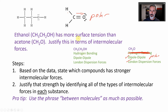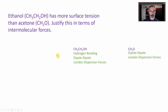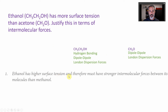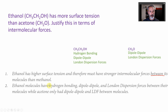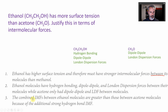Here's how we make the argument. Step one: 'Ethanol has higher surface tension and therefore must have stronger intermolecular forces between its molecules than acetone.' Step two: 'Ethanol molecules have hydrogen bonding, dipole-dipole, and London dispersion forces between their molecules, while acetone only has dipole-dipole and London dispersion forces between its molecules.' Step three: 'The combined intermolecular forces between ethanol molecules are greater than between acetone molecules because of the additional strong hydrogen bond intermolecular force.'